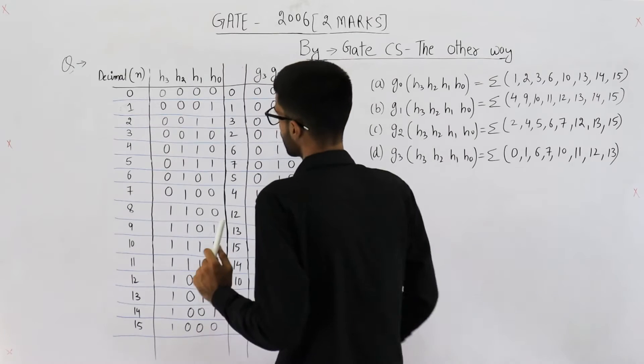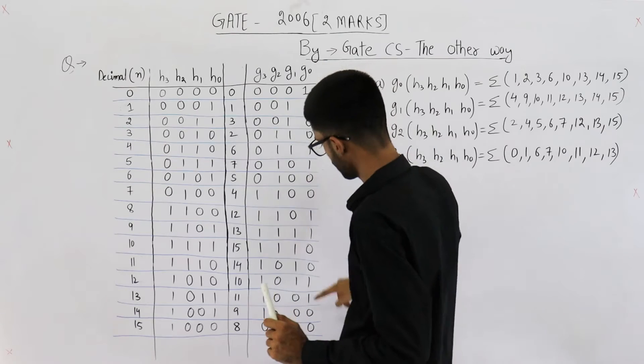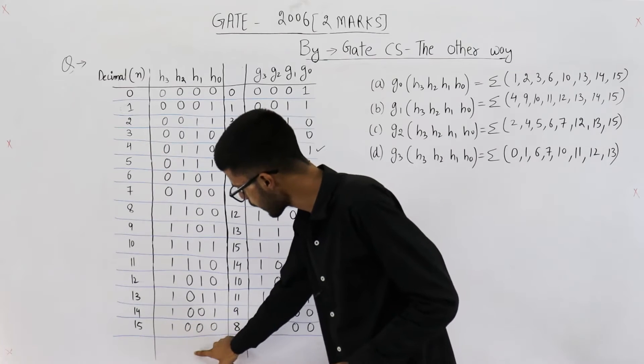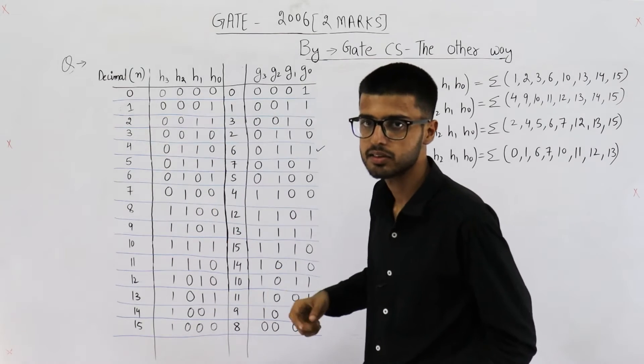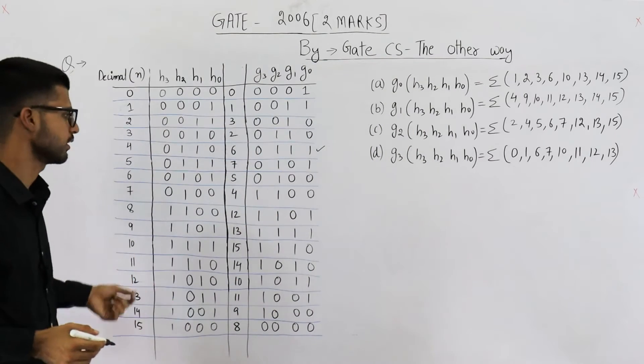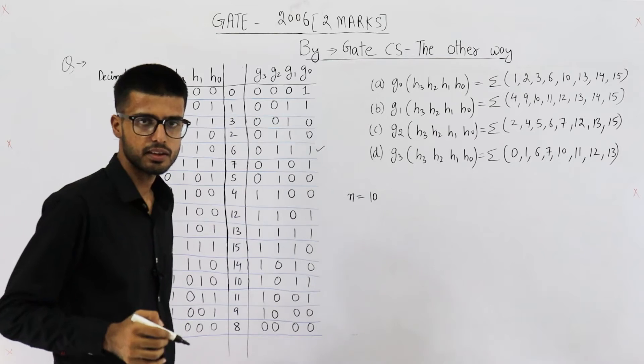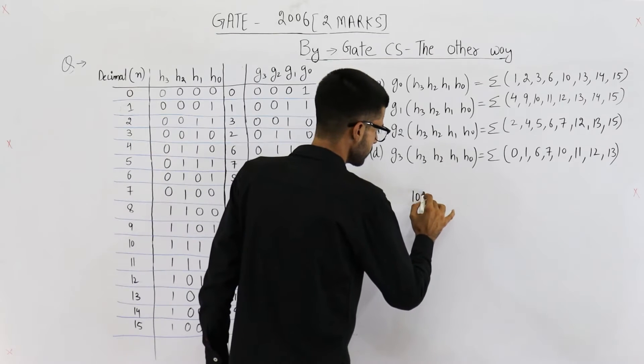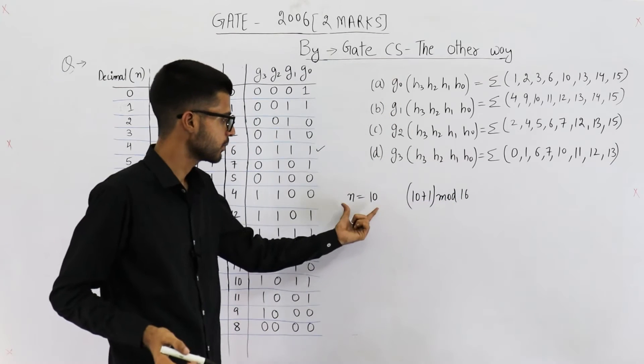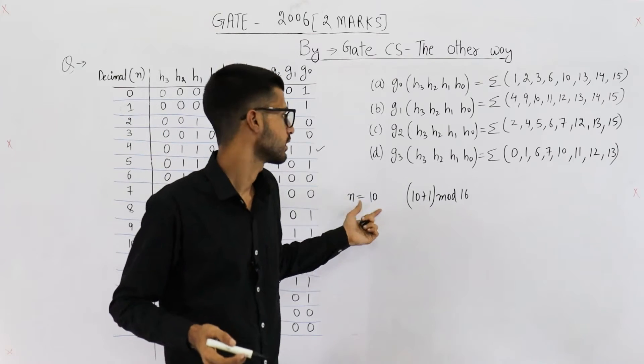Now, you can see for all of these 14, rather these 15 from 0 to 14, this trend is followed. But for 15, you can see we don't have any number here. So this one is taken. That is due to the modulo 16. For example, let's take 10. For 10, n is equal to 10. h is the gray code of 10. What is g? g will be 10 plus 1 mod 16. That will be 11 mod 16.